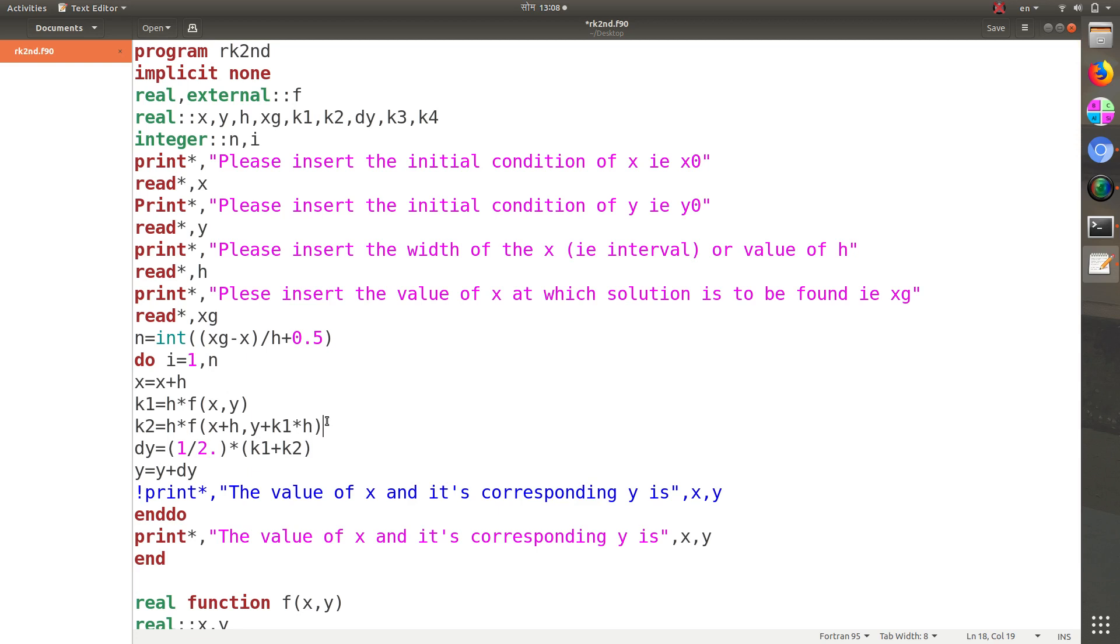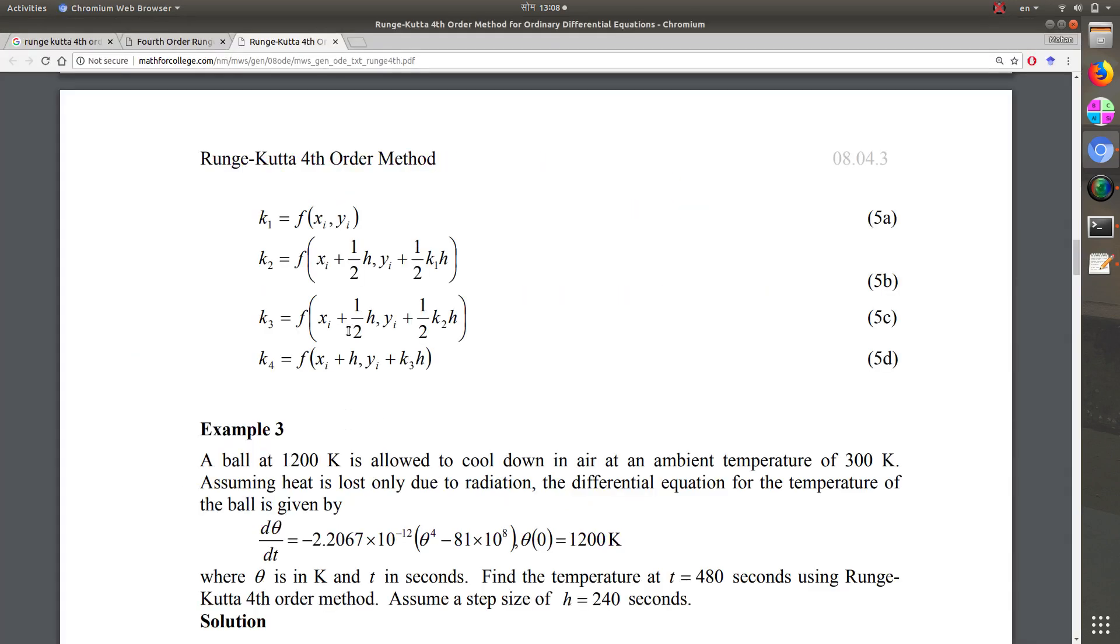Let us modify this. This is h times f(x + h/2, y + k1*h/2). So h/2 is required. Add a dot in here so that it could calculate the right end. Similarly here also divide by 2. As in this formula, x + h/2, y + k1*h/2.